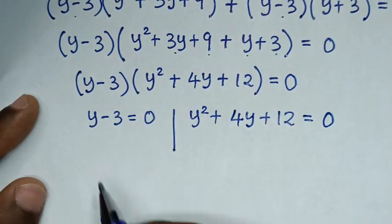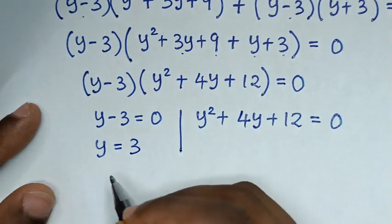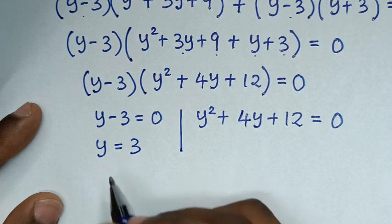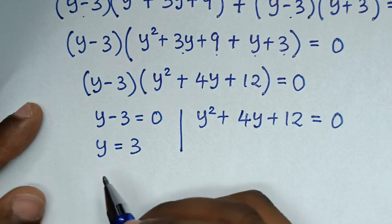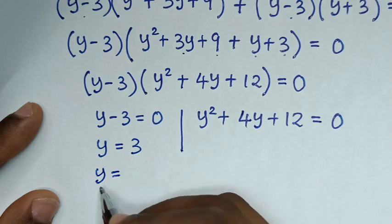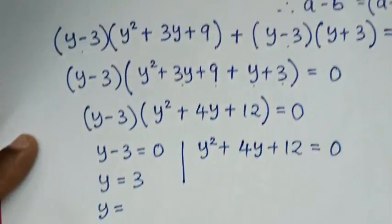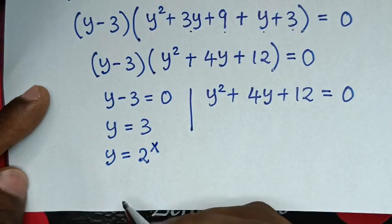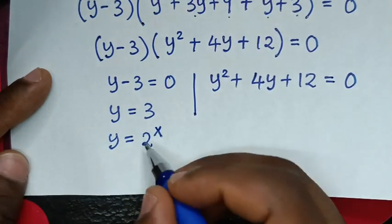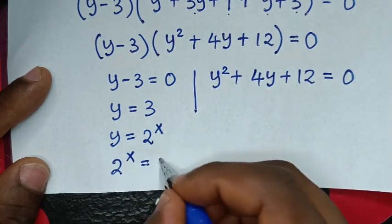From the first solution, y minus 3 equals 0, so y equals 3. Now we are supposed to find x, not y. Recalling that y equals 2 power of x, we compare: 2 power of x is equal to 3.